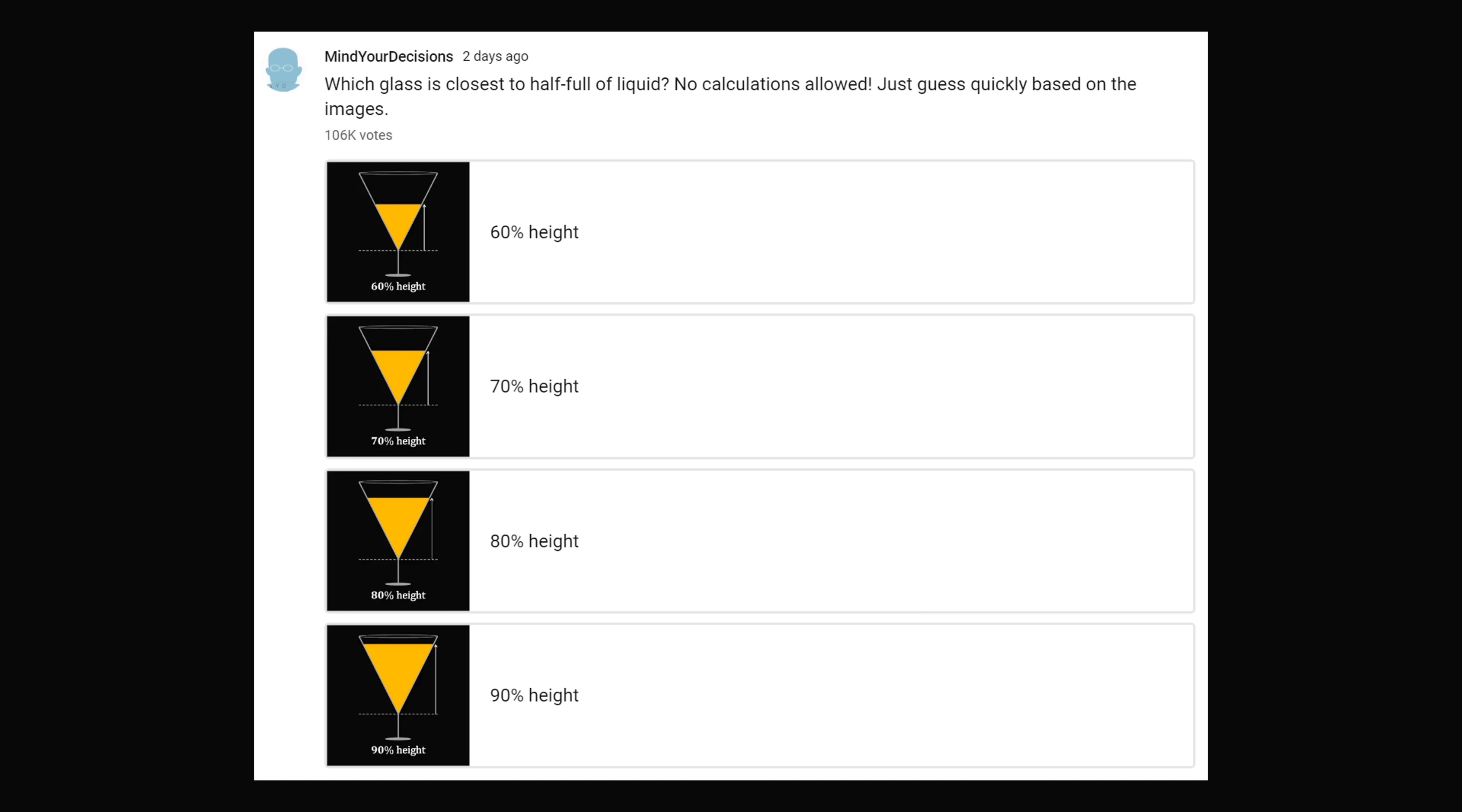So how did people respond? I was very amazed that over a hundred thousand votes came in in just two days. 60% of height got a total of 8% of the votes. 70% of height got 60% of the votes. This is what I would have thought the answer was. And most people also thought this is where the glass is half full. 80% of height got only 28% of the votes. And this in fact was the correct answer.